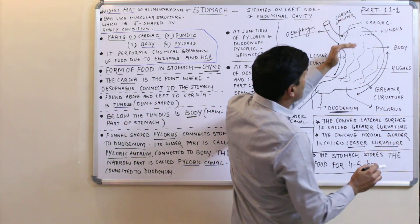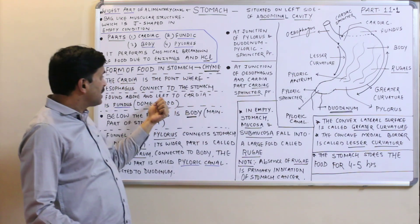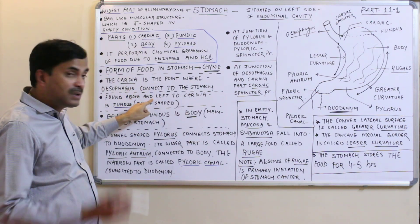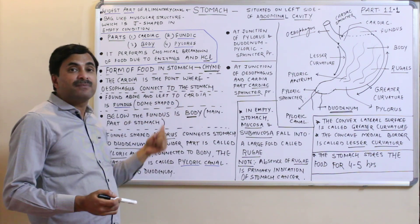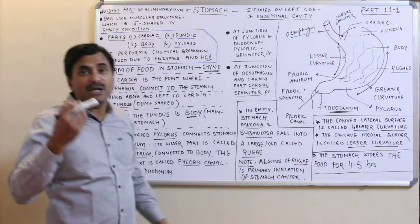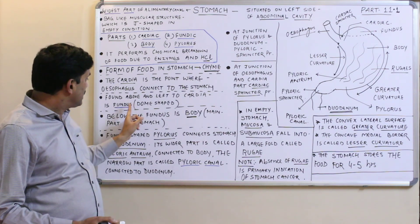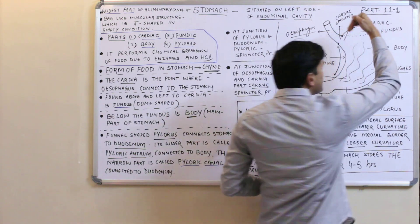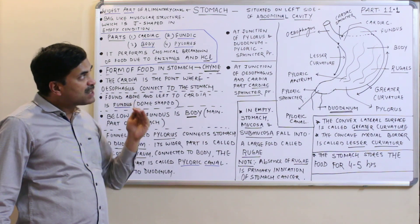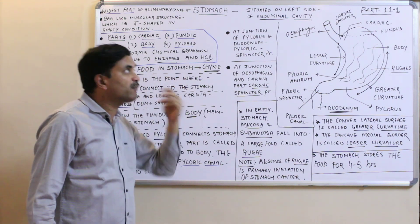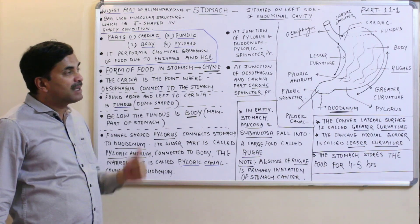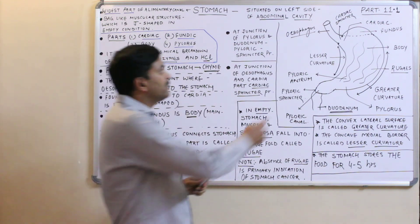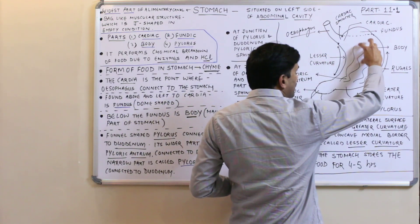The second part is the fundus, found above the cardiac part and to the left of the cardia. It is dome-shaped. Just above and to the left of the cardia, a dome-shaped part is present, and that dome-shaped part is called the fundus, also popularly called the fundic part of the stomach.